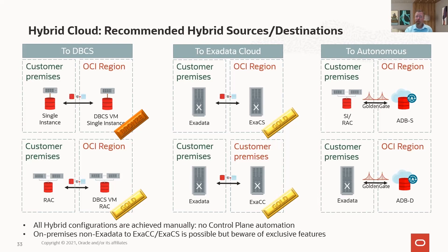Some exclusive Exadata features may only be available when going Exadata to ExaCS — so you have options. Autonomous database supports Active Data Guard, and we can also set up GoldenGate — we support that today and plan on expanding those capabilities in the future. GoldenGate would be the way to set this up today, with single instance or RAC, going to autonomous database shared or dedicated depending on what you want. Usually you want dedicated with Exadata. The autonomous database can also run at Cloud at Customer. Autonomous database runs on Exadata, so you get all those advantages.